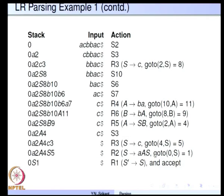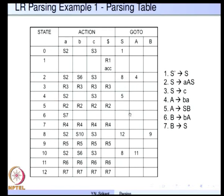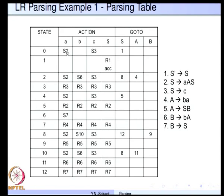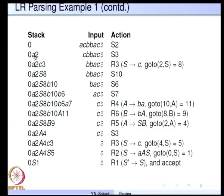Let us look at an example to understand all the operations just described. The stack contains 0 and the input is A C B B A C. The parser says shift. This is the parsing table we have in mind, and these are the productions we are using. The entry for state 0 on input A is S2, so the symbol A is shifted onto the stack along with state 2.